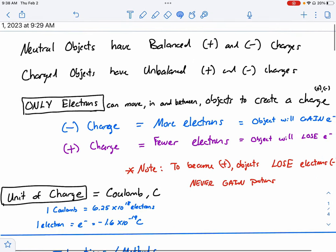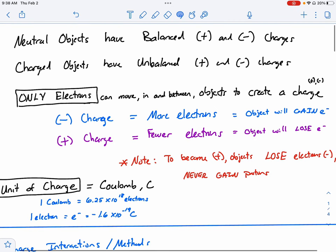We know that neutral objects are going to have a balance of charges. So what that means is that there is an equal number of positive and negative in that object or on the surface of it, creating a neutral object.